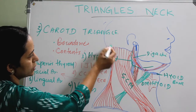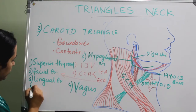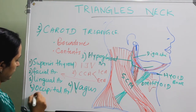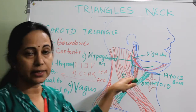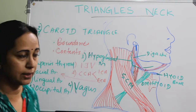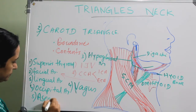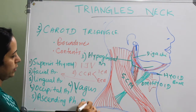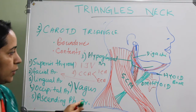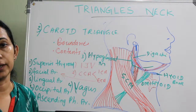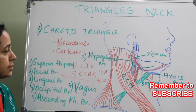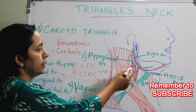The fourth branch is the occipital artery, going to the occipital area. And also the ascending pharyngeal artery going to the pharynx. All five branches are given off from the external carotid artery in the carotid triangle. The corresponding veins — superior thyroid vein, facial vein, lingual vein, occipital vein, and the ascending pharyngeal vein — follow these arteries and drain into the internal jugular vein.